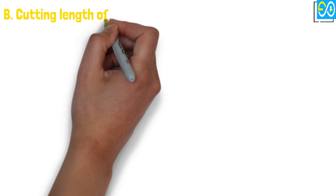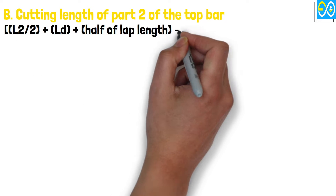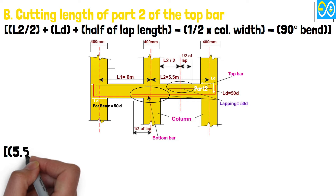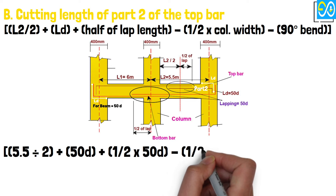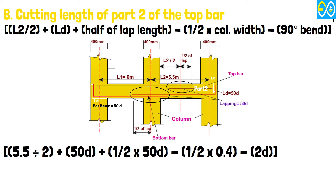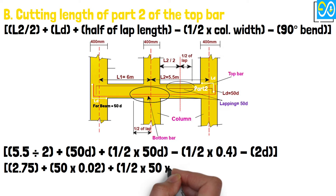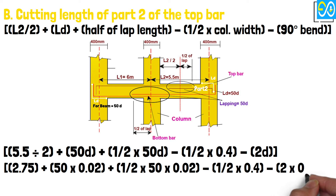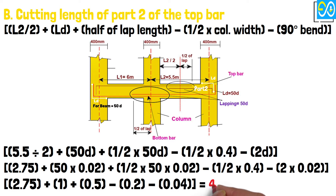Cutting length of Part 2 of the top bar equals L2 divided by 2 plus Ld plus half of lap length minus half times column width minus 90-degree bend. Equals 2.75 plus 50 times 0.02 plus half times 50 times 0.02 minus half times 0.4 minus 2 times 0.02. Equals 2.75 plus 1 plus 0.5 minus 0.2 minus 0.04, equals 4.01 meters.